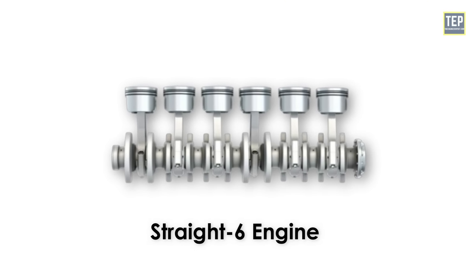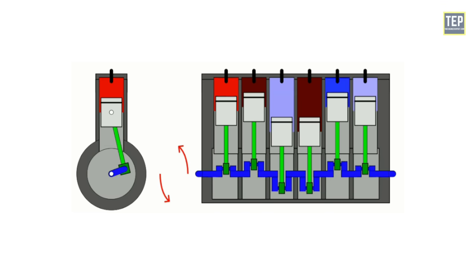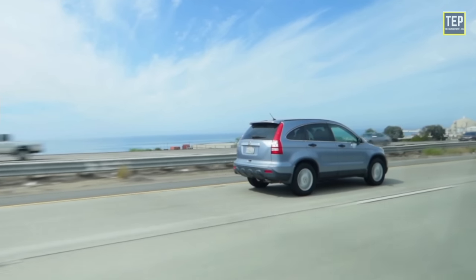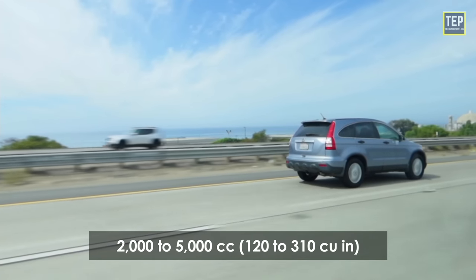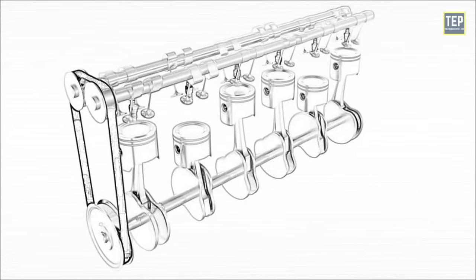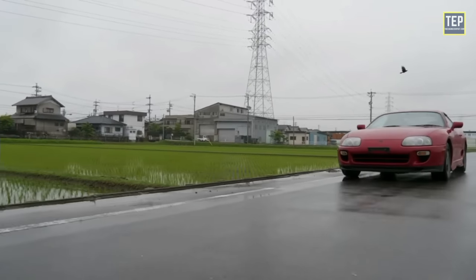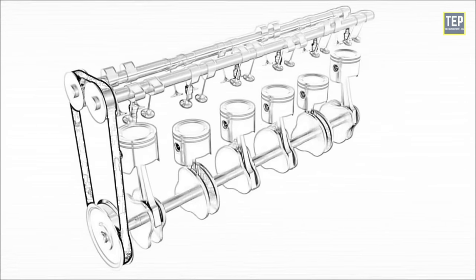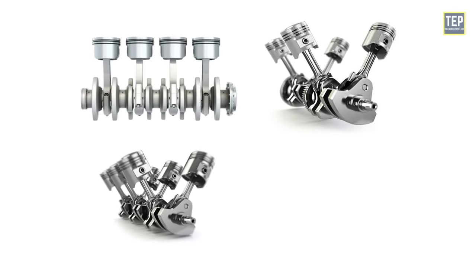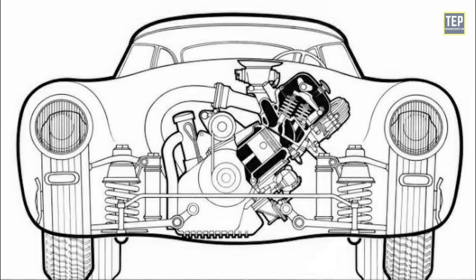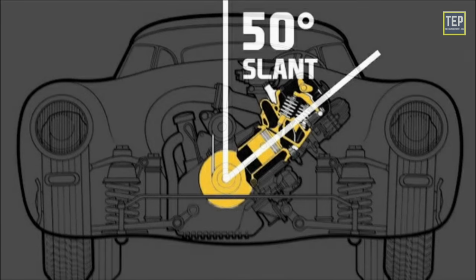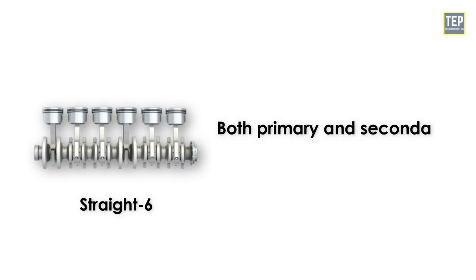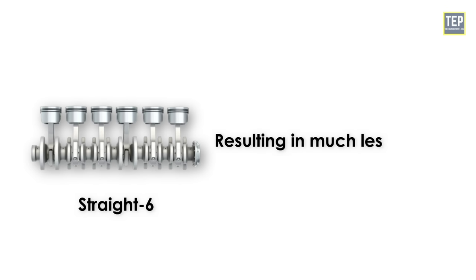The straight six engine, also referred to as an inline six, is an IC engine with six cylinders mounted in a straight line along the crankcase with all pistons driving a common crankshaft. In automobiles, the straight six design is used for engine displacements ranging from approximately 2,000 to 5,000 cubic centimeters. Since the length of an engine is roughly proportional to the number of cylinders, the straight six is longer than alternative layouts such as I4, V4, V6, or V8. The bank of cylinders may be oriented at any angle; where the bank is inclined away from vertical, the engine is sometimes called a slant six. The straight six layout is the simplest engine layout that possesses both primary and secondary mechanical balance, resulting in much less vibration than engines with fewer cylinders.